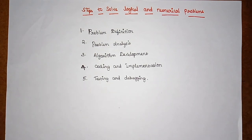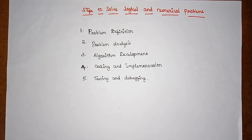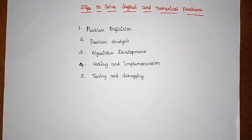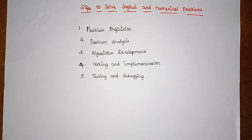Finally, testing and debugging: whenever a code is written and the application or program is completed, we should test it to make sure there are no errors and that the program produces the required output. These are the basic steps to follow when solving a problem. Today's discussion is specifically about the third phase — the algorithm — what it is, how it should be, and what its representations are.